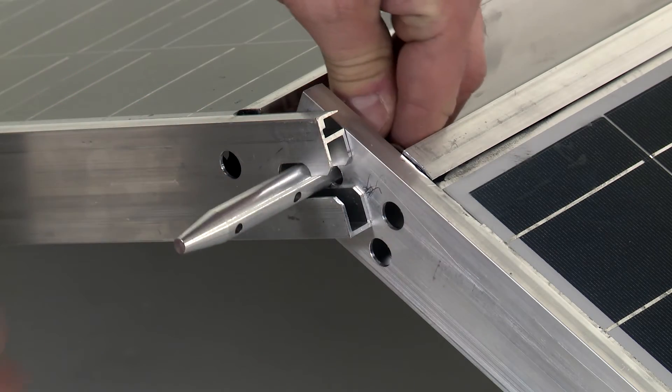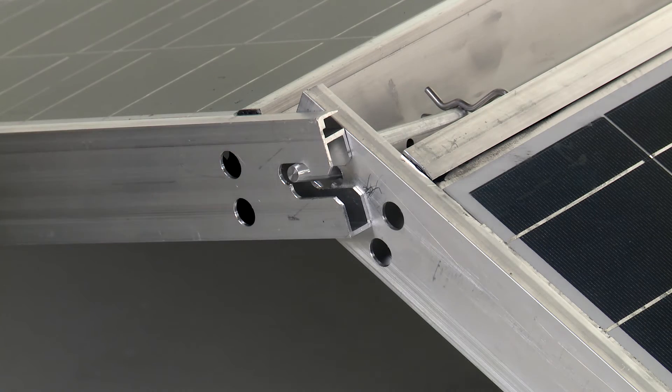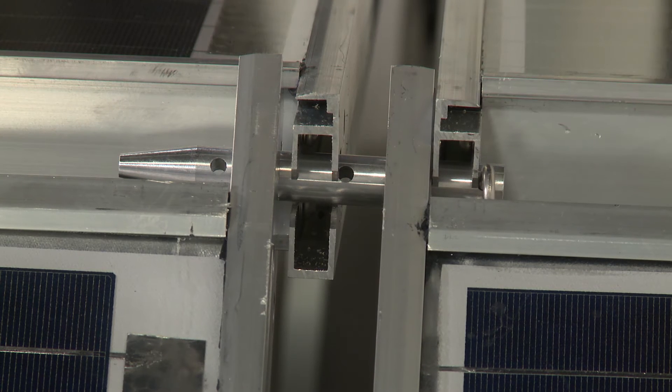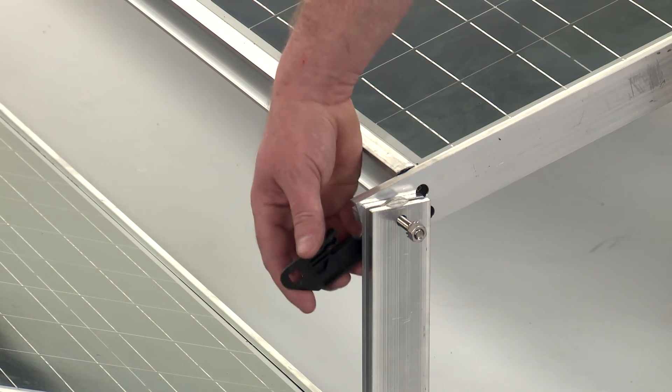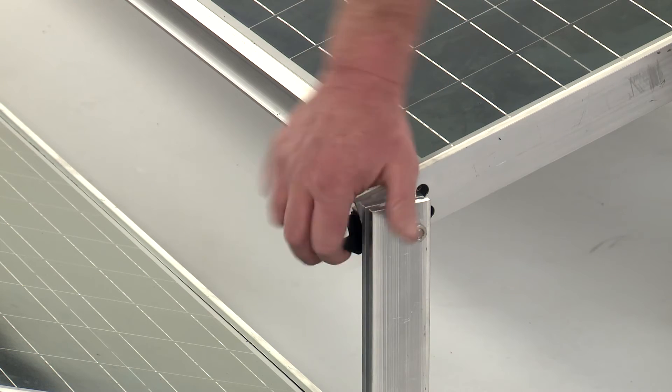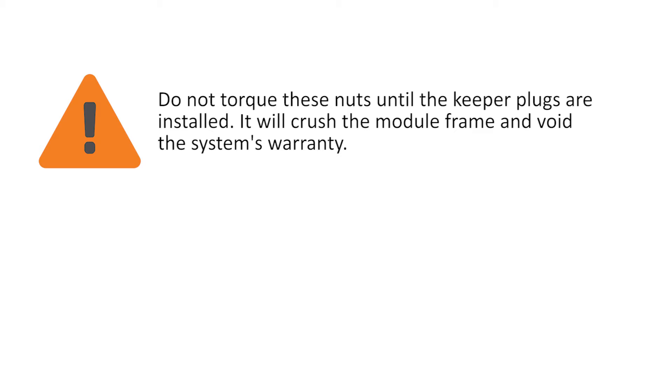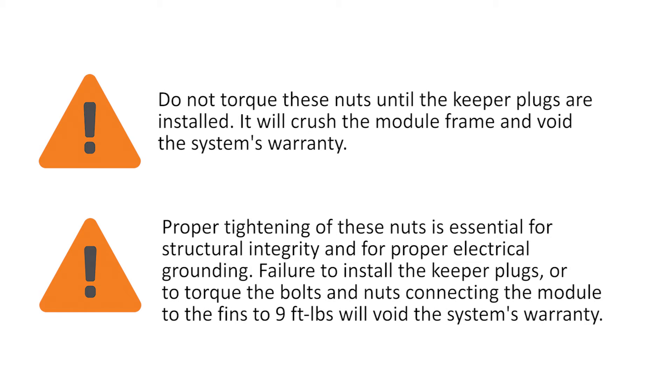On the other module extension, the side where the array will continue, slide a tapered pin in just far enough to hold the frames in place. You will slide the pin in the rest of the way when the adjacent modules are installed. Insert a keeper plug in the lower module frame ends until it clicks in place. Torque the nuts that secure the module to the fins to 9 foot-pounds. Do not torque these nuts until the keeper plugs are installed. It will crush the module frame and void the system's warranty. Proper tightening of these nuts is essential for structural integrity and proper grounding. Failure to install the keeper plugs or to torque the bolts and nuts connecting the module to the fins to 9 foot-pounds will void the system's warranty.